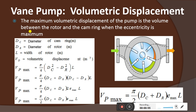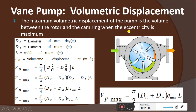The maximum volumetric displacement of the pump is the volume between the rotor and the cam ring when the eccentricity is maximum. Maximum volumetric displacement is the maximum amount of liquid that can be pumped, and it is only going to be achieved when there is maximum eccentricity.